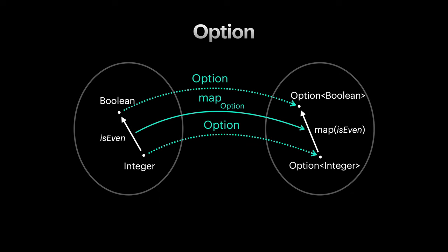And this is the option functor. Here's something interesting. You've probably noticed option of integer and option of boolean are types similar to integer and boolean. The map of is even similar to is even is also a function.